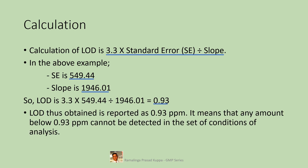The LOD thus obtained is reported as 0.93 ppm. This means any amount below 0.93 ppm cannot be detected under the set conditions of analysis. LOD is reported as parts per million (ppm). If the specification limit is less than 0.93 ppm, this analytical method is not suitable — you may need to modify the existing method or use a different method.